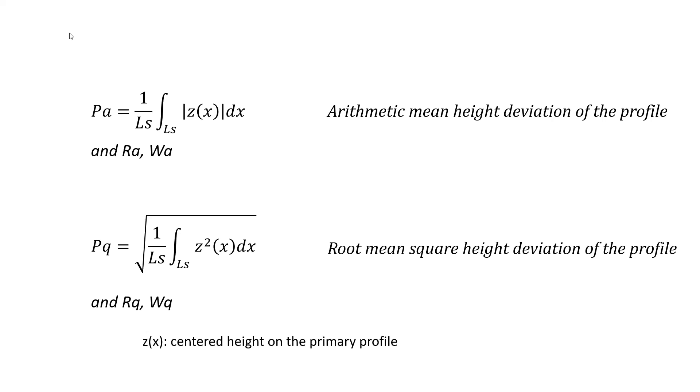PA uses an arithmetic mean of the absolute values of heights. PQ is the root mean square of all heights. It is therefore the standard deviation of the height distribution. These two parameters are an evaluation of the mean roughness height, that is not affected by extreme points.